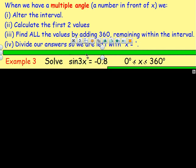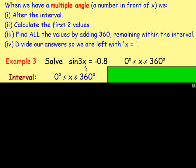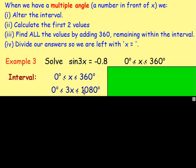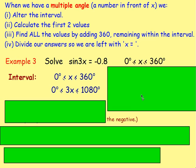So with sin(3x) equals negative 0.8, x is between 0 and 360 degrees. Because we've got 3x, multiply both ends of the interval by 3: so 3x is between 0 and 1080. Because it's sin(3x), you're going to have three cycles of your sine graph between 0 and 360.